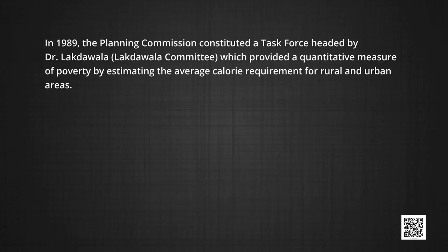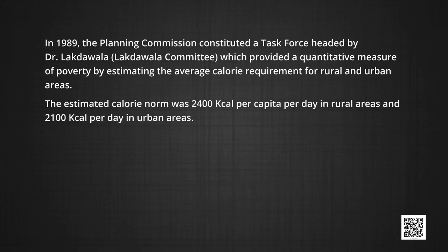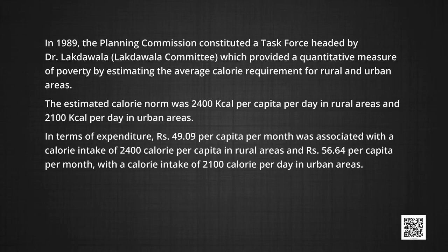The planning commission also constituted a task force headed by Dr. Lakdawalla — that was the Lakdawalla committee — which provided a quantitative measure of poverty by estimating the average calorie requirement for rural and urban areas. The estimated calorie norm was 2,400 kcal per capita per day in rural areas and 2,100 kcal per capita per day in urban areas. In terms of expenditure, rupees 49.09 per capita per month was associated with a calorie intake of 2,400 per capita in rural areas, and rupees 56.64 per capita per month with a calorie intake of 2,100 per day in urban areas.